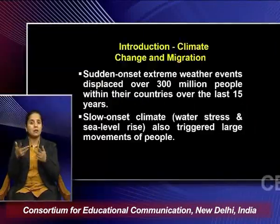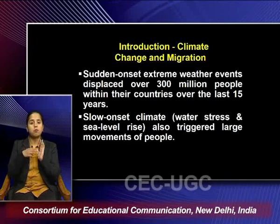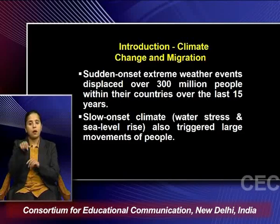Looking at sudden onset events, extreme weather events tend to displace a lot of people. Estimates suggest that over 300 million people within their countries have been displaced due to sudden extreme events — floods alone have led to the movement of more than 300 million people in the last 50 years. Slow onset impacts such as water crisis or sea level rise have also triggered large movements of human population within and between countries. Climate change-related migration is therefore an important concern.